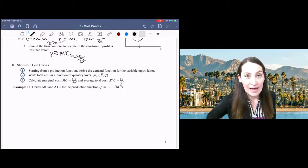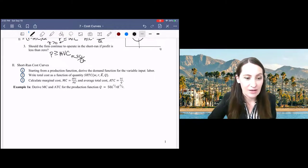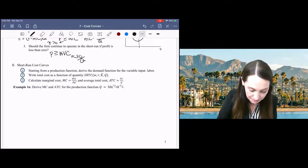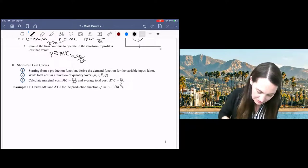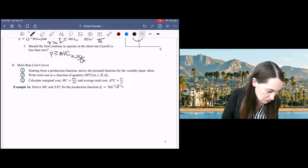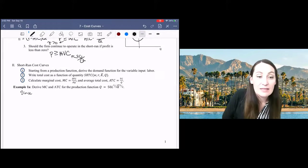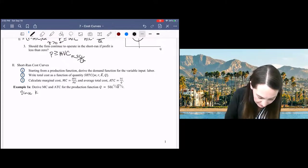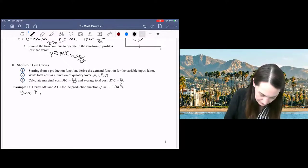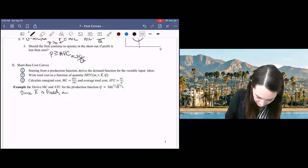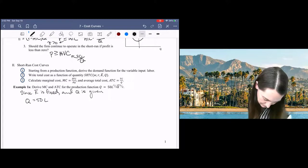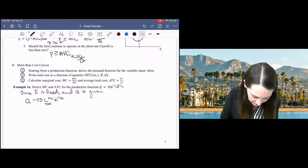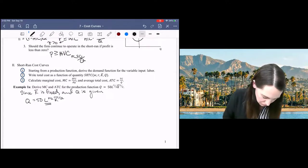Remember from last time that it's actually pretty easy to calculate labor demand when capital is constant because capital is constant. You can't do anything about it, so you don't need to do your maximization function. Capital is constant, so all we need to do to get labor demand is to solve for L using our production function. So since capital is constant,